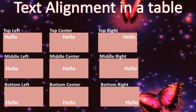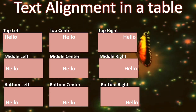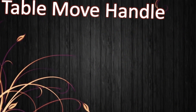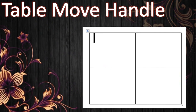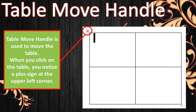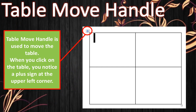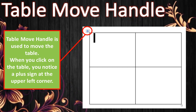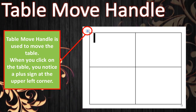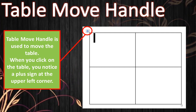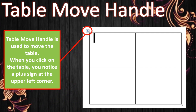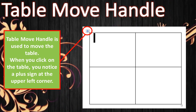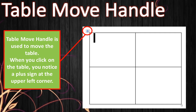I hope you are able to see the difference between these alignments. Next is the table move handle. Whenever you click inside a table you will notice a plus sign at the upper left corner — this is the table move handle. It is used to move the table from one location to another location on the page.